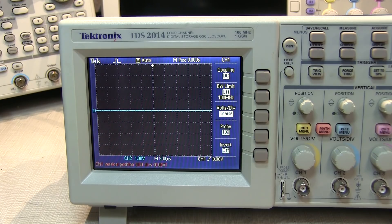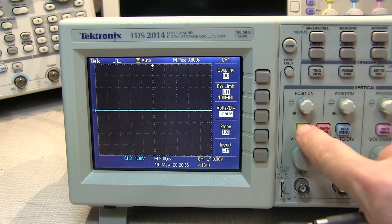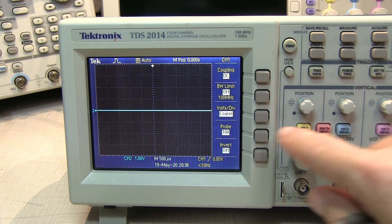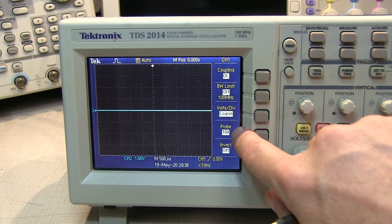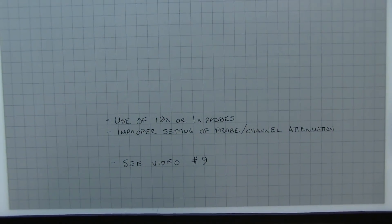So again, it's really up to you to ensure that the probe attenuation that you've got set on the scope matches the attenuation of the probe. With a 10x probe, set it to 10x. If you're using a 1x probe or direct connection, make sure you set it to 1. But this is the most common way that you get the 10x errors in amplitude.